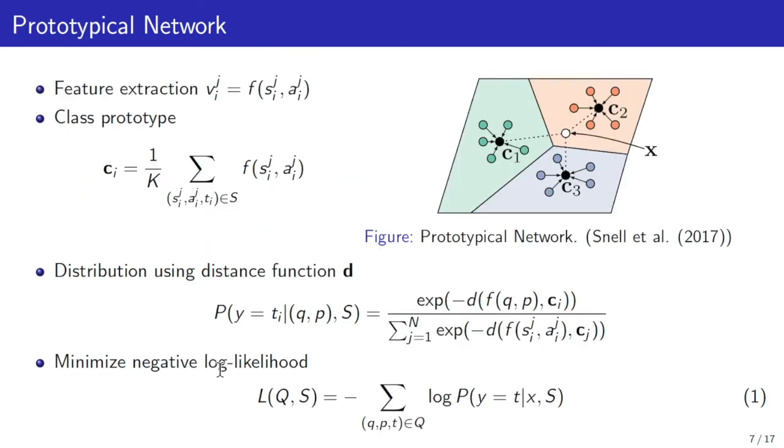Prototypical network is a common metric-based few-shot learning model. Given the support set S and query set Q, it employs a neural network denoted as F to encode examples into vectors. Then for each class in the support set, it calculates a representative named prototype by averaging all vectors in the same class. Next, using a distance function d, it calculates the distance distribution between the query instance X to all the prototypes. Finally, the model is trained by minimizing the negative log likelihood of the distance distribution.